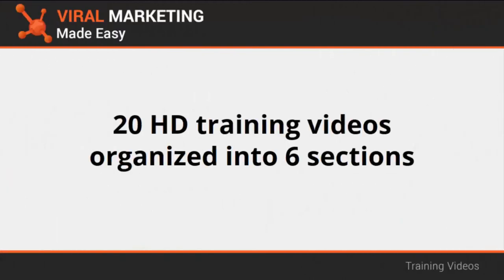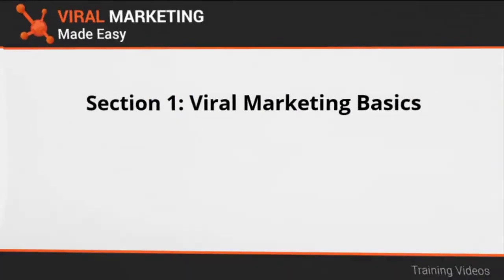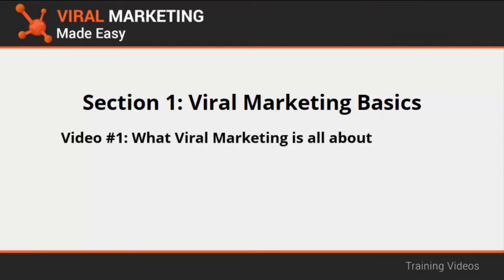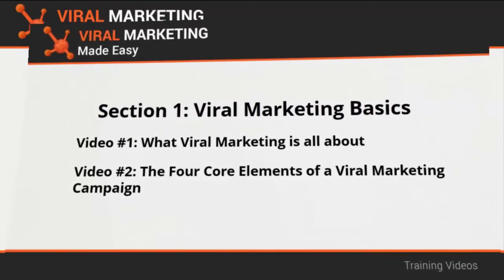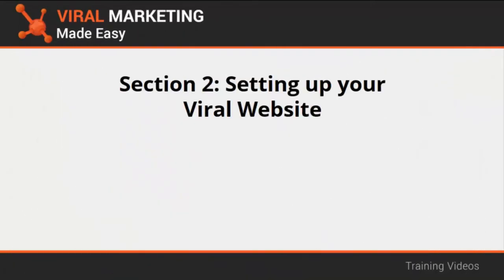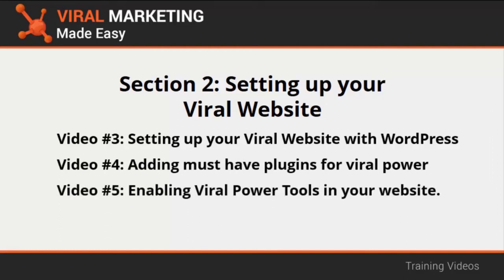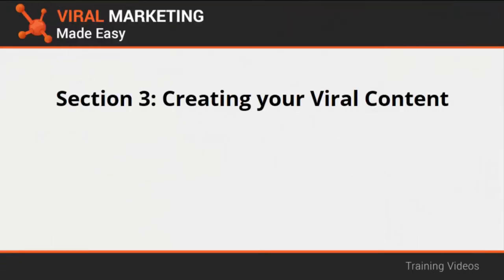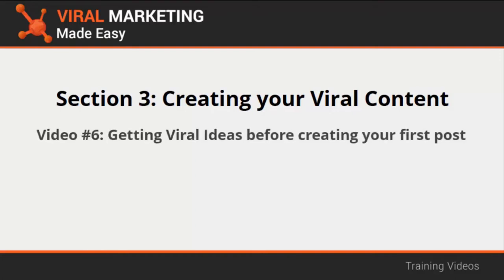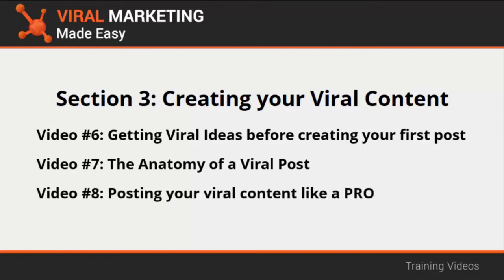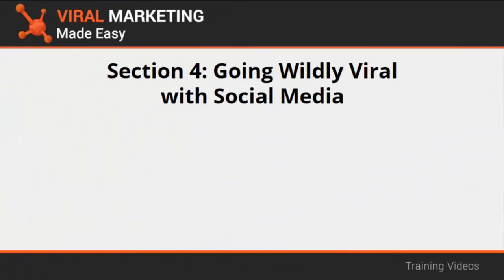This video training is comprised of 20 HD training videos organized into six sections. Section 1 covers viral marketing basics in videos 1 and 2, talking about what viral marketing is all about and the four core elements of a viral marketing campaign. Section 2 covers setting up your viral website in videos 3 through 5, including WordPress setup and must-have plugins. Section 3 covers creating your viral content in videos 6 through 8.